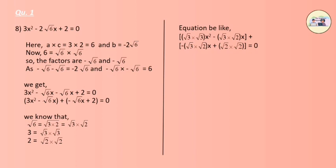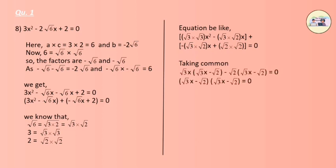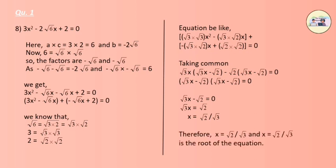Taking common, we get (root 3 x minus root 2)(root 3 x minus root 2) equals to 0. After solving, we get the final answer as x equals to root 2 by root 3. This equation has a common root.